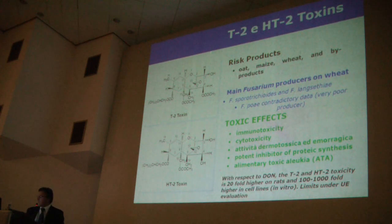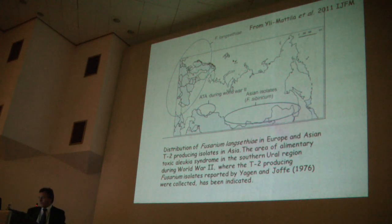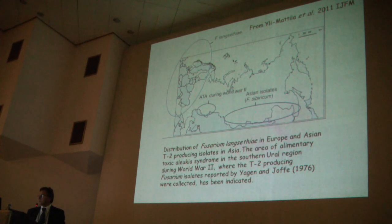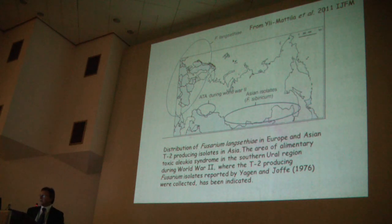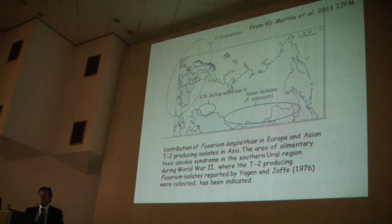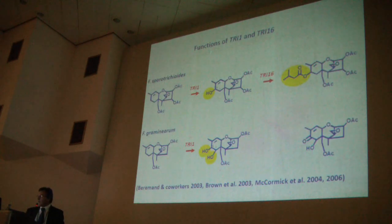Regarding Fusarium poae, I want to address the fact that all speakers have discussed T2 and HT2. I am reminding you that Fusarium sibericum was isolated mainly in the southern and eastern part of Russia, so it would be interesting to understand whether there is a colonization or presence of Fusarium sibericum in our area — perhaps in the southern region of Europe, where meteorological conditions may be more closely related to those of the southern and eastern part of Russia.